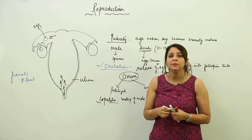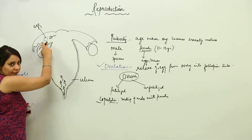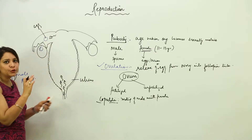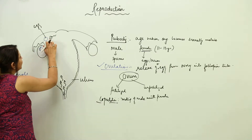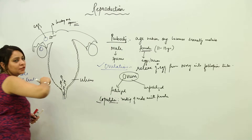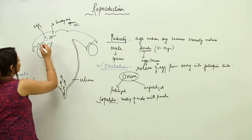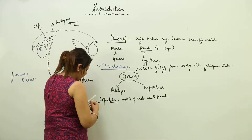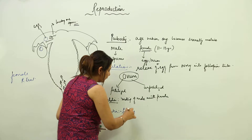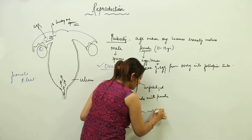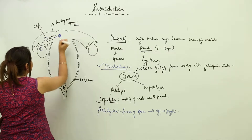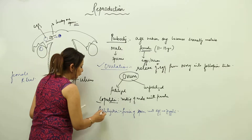Even after reaching the fallopian tube, the sperm has to lyse the wall of the ovum using its head. There are certain factors which must match — you'll study these in higher classes. So let's say this is the lucky sperm which has everything desired to fertilize the ovum. Fertilization is the fusion of sperm with egg to form a zygote. The zygote is the first cell formed after fertilization.